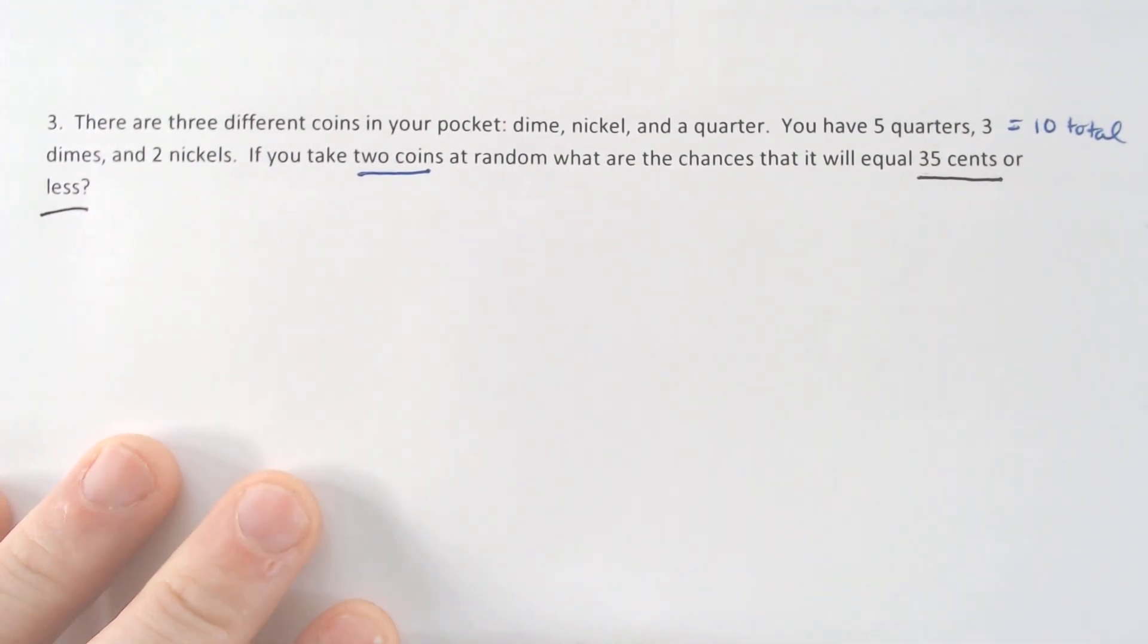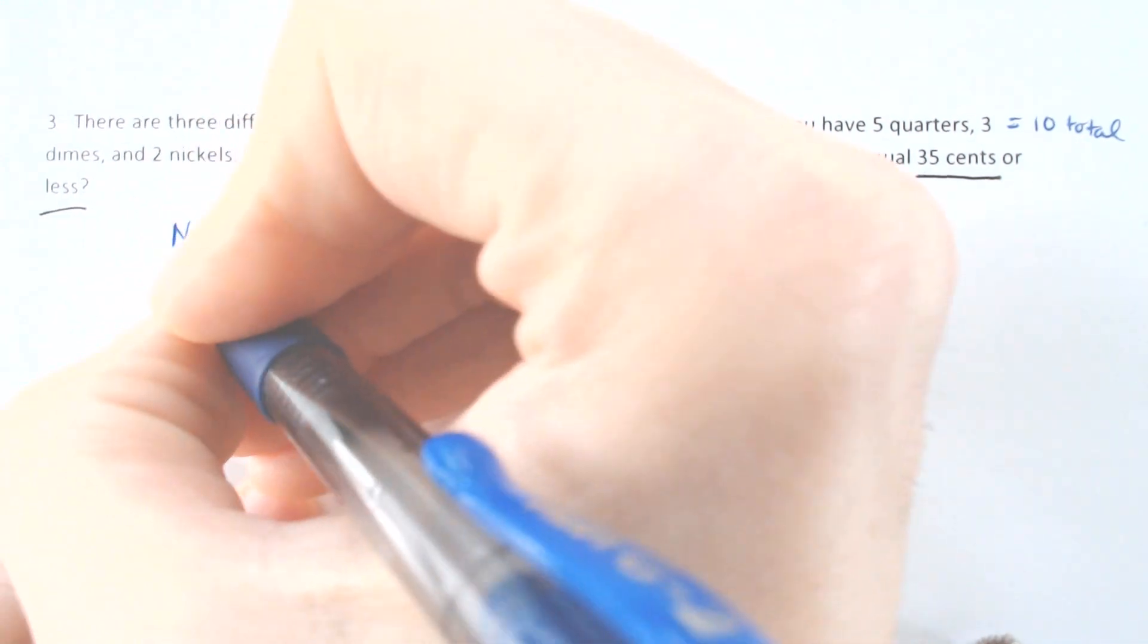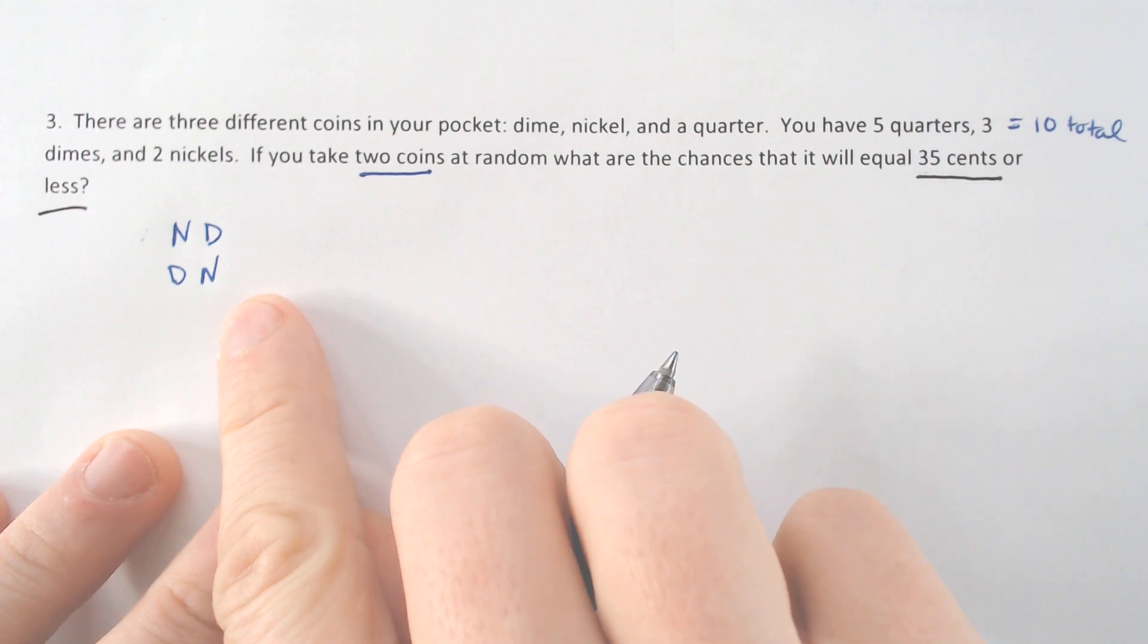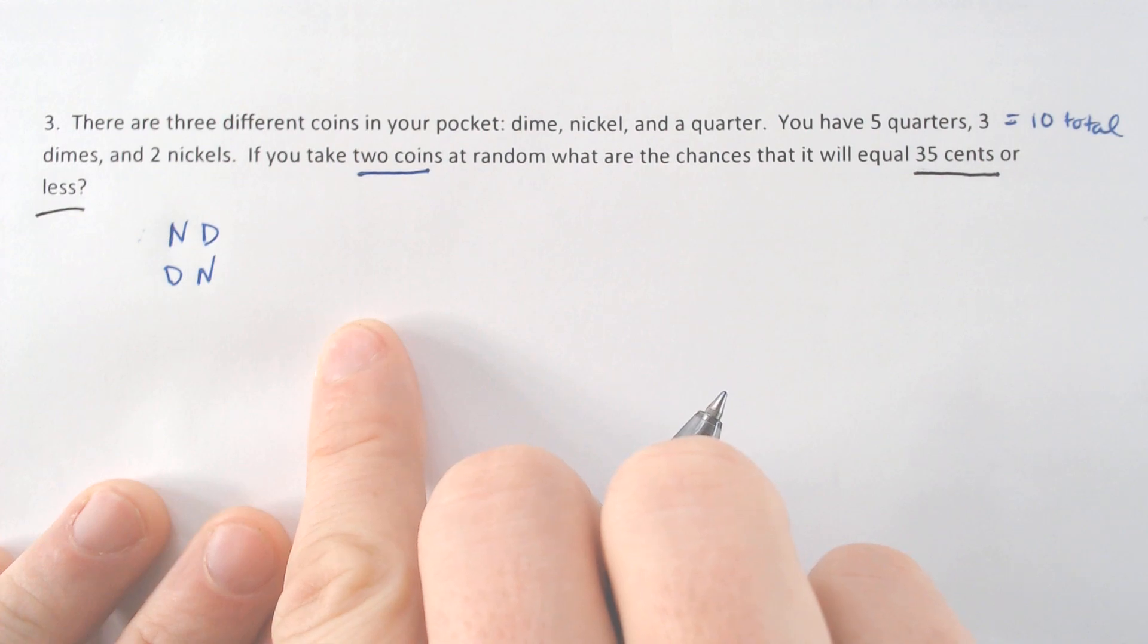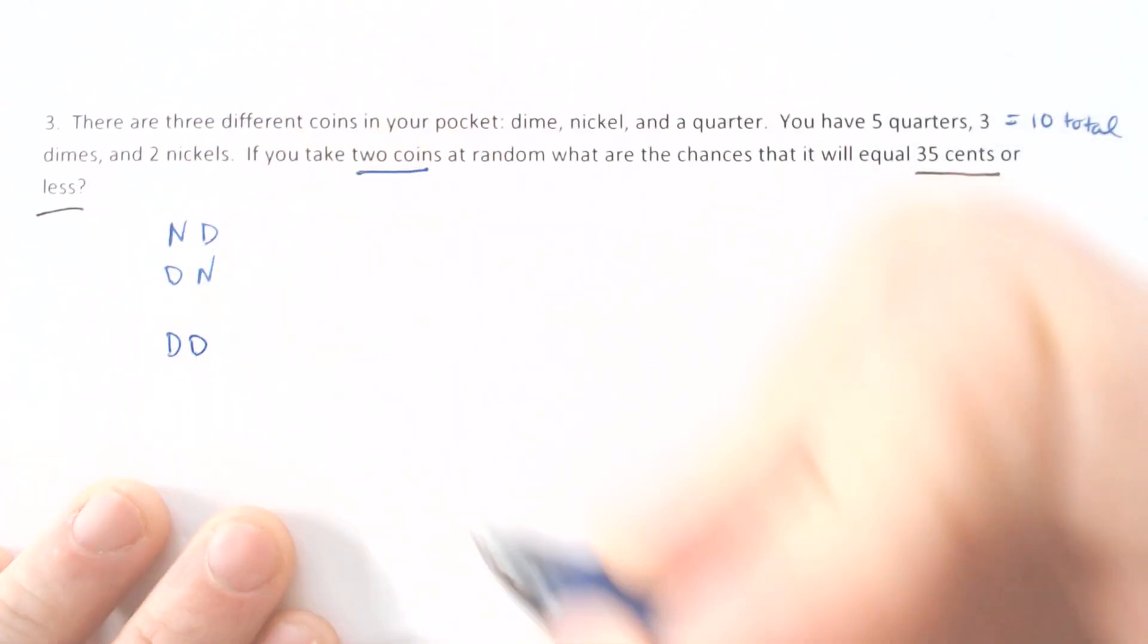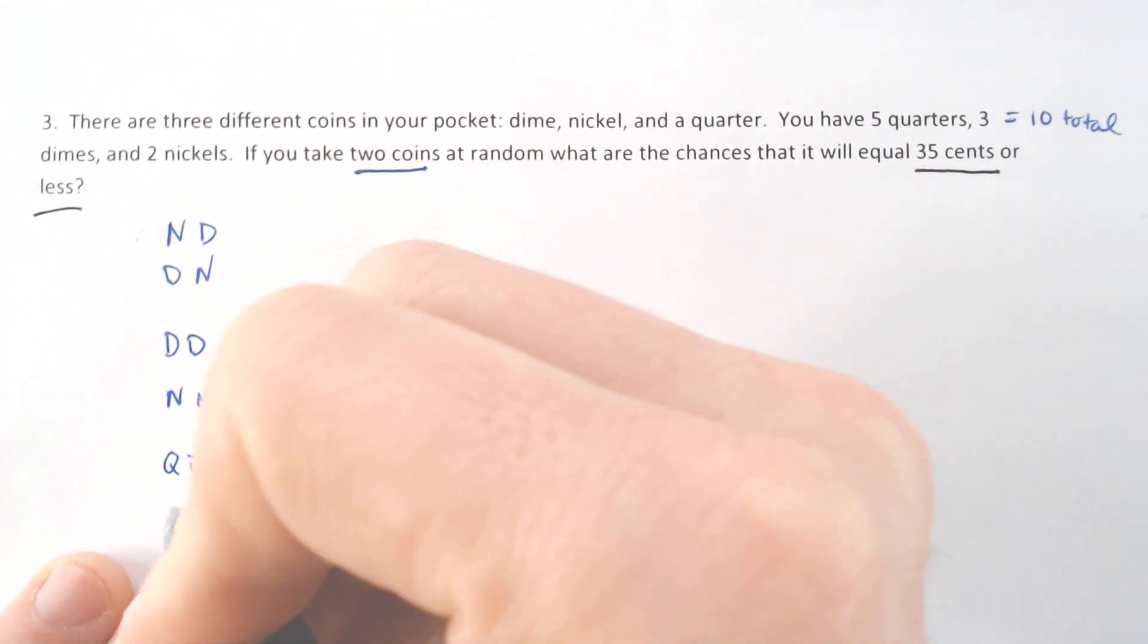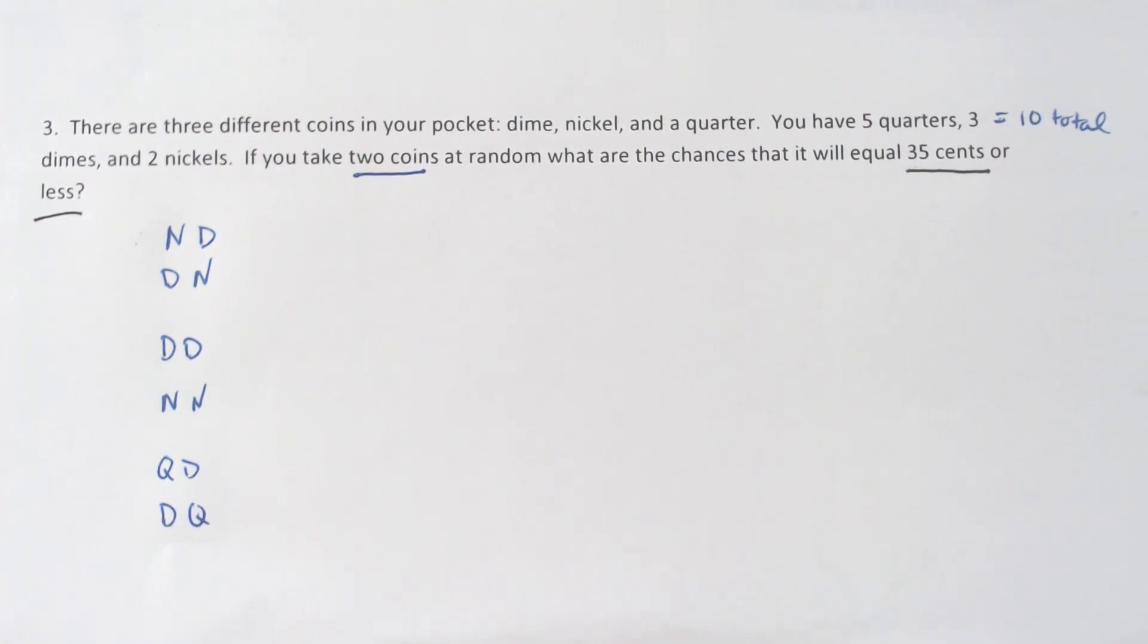So what are the ways we can get 35 cents or less? There's a lot of ways we can get 35 cents or less. You could do a nickel and a dime, but you could also then do a dime and a nickel. Both of those would be the same, but they would give you equally likely. So that would be a scenario where you'd have to get both of them, add them together. But you could also do a dime and a dime, which would be a very unique scenario or a nickel and a nickel, or you could do a quarter and a dime or a dime and a quarter. And that's a lot of different things. And I don't even know if we've came up with them. We didn't even factor in the fact that you could have pennies in your pocket, which we don't.